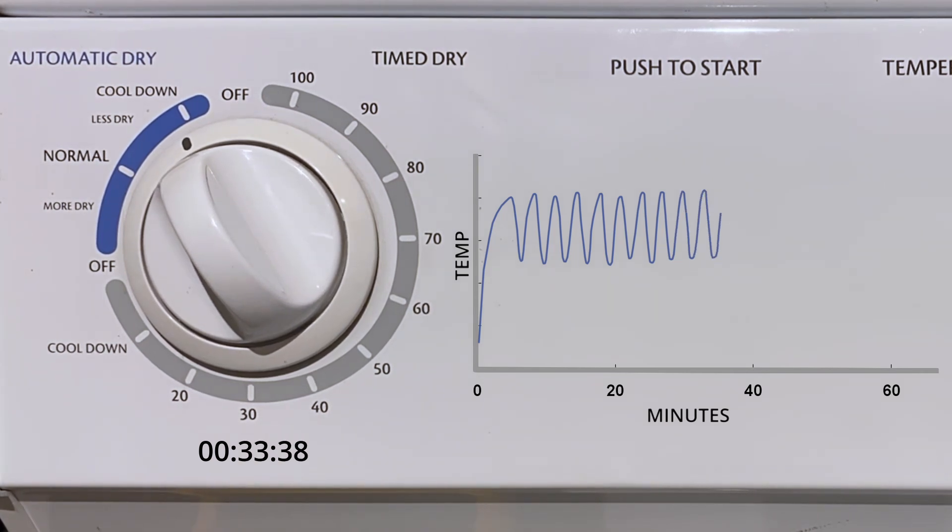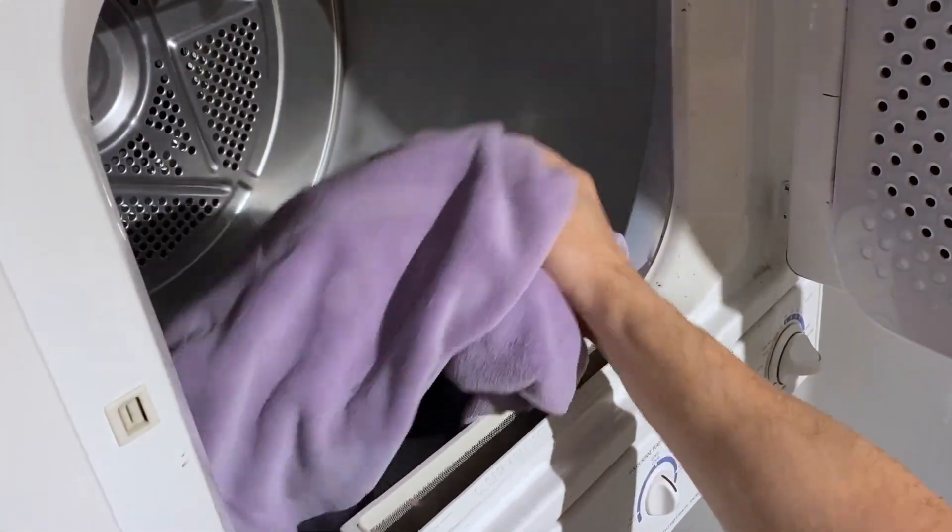Notice the knob reaches off after 39 minutes, about 10 minutes longer than our dumb test. Let's see if that extra 9 minutes helped the towel get dry. Lo and behold, the laundry is dry.